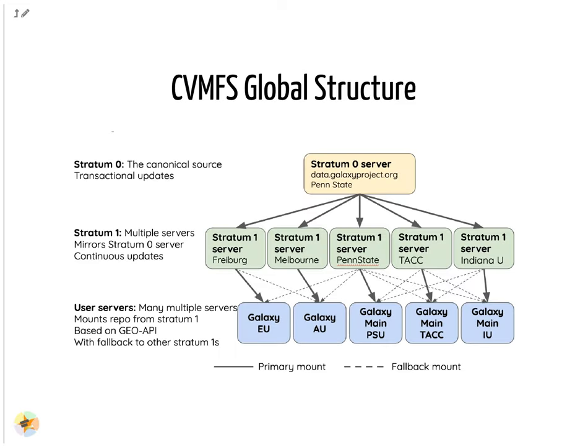CVMFS has a hierarchical structure. At the top is the Stratum 0 server — the original copy of the datasets. This is replicated to the read-only Stratum 1 servers. Anyone can connect to these Stratum 1 servers, and whenever connections fail, CVMFS will fail over to another mirror. The mirror selection process is based on connection round-trip times, and as a result, the nearest mirror is usually selected.